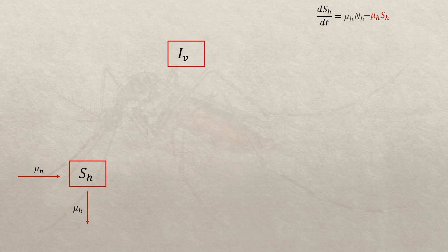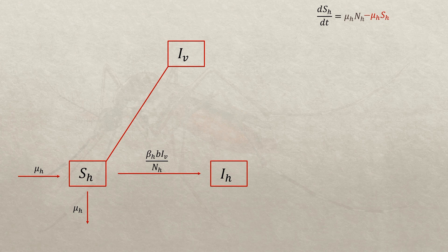The infected mosquito class bites susceptible persons at this rate, producing a negative term: negative times this rate multiplied by S sub h. This gives us the first equation of the model. Similarly, the second equation will be the rate of change dI/dt in the compartment I sub h.